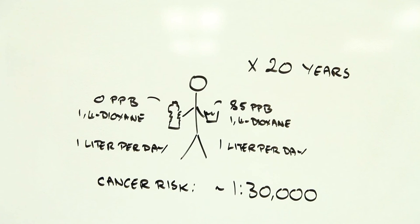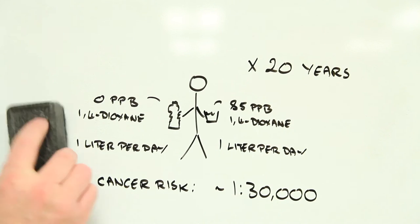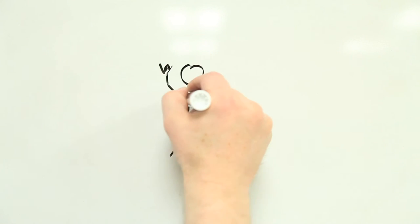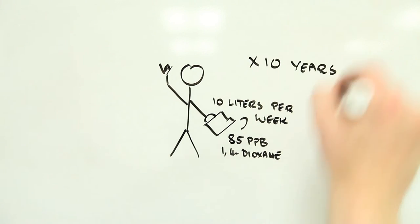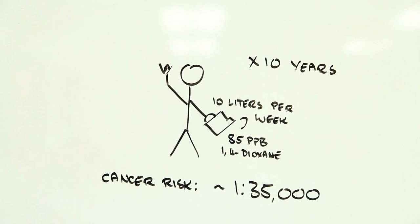Still high, but much lower than the one in 4,000. Or imagine you're a teenager who drank 10 liters a week of contaminated water for 10 years before leaving for college. According to current research, your cancer risk would be closer to 1 in 35,000.